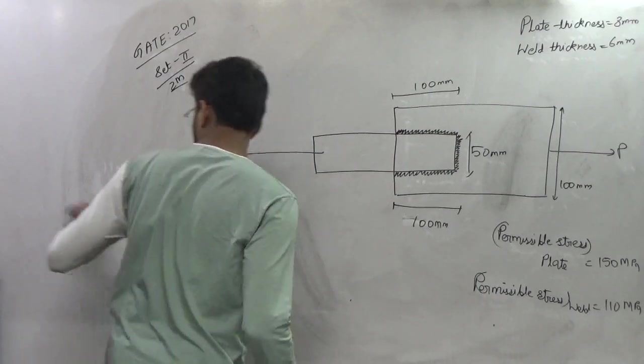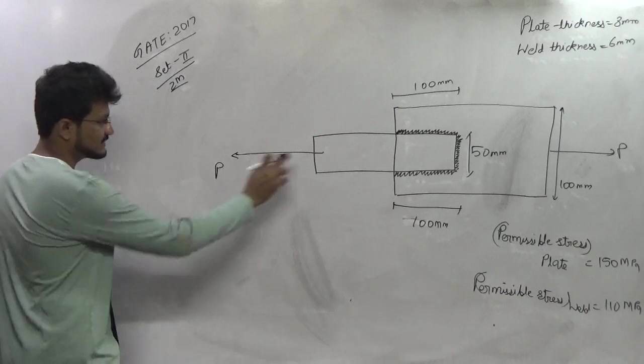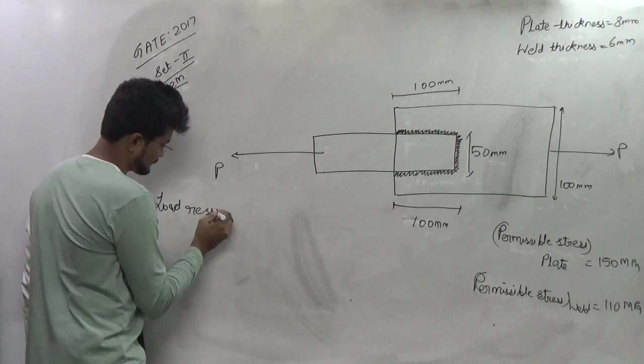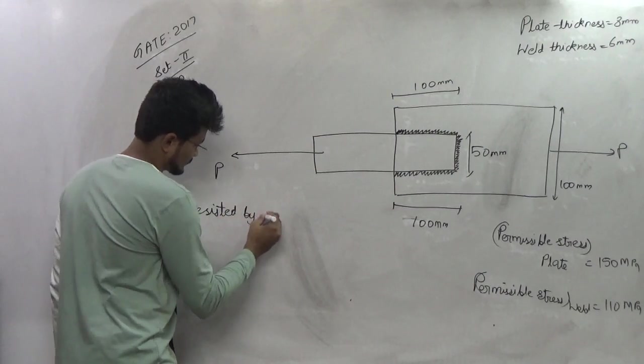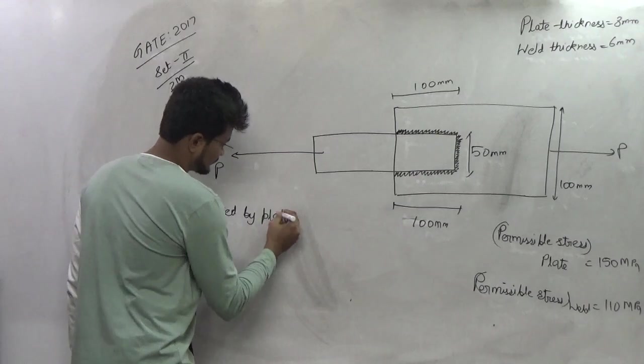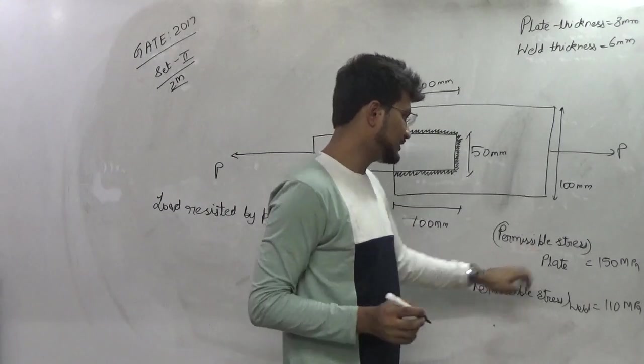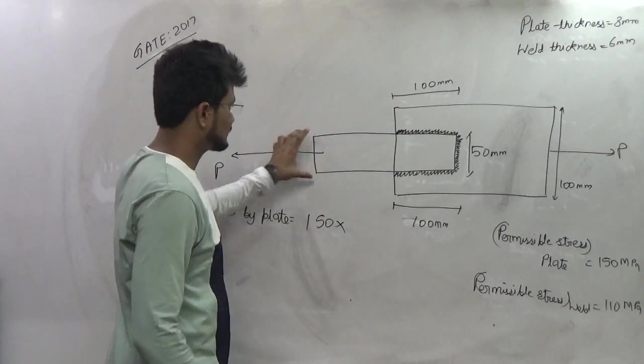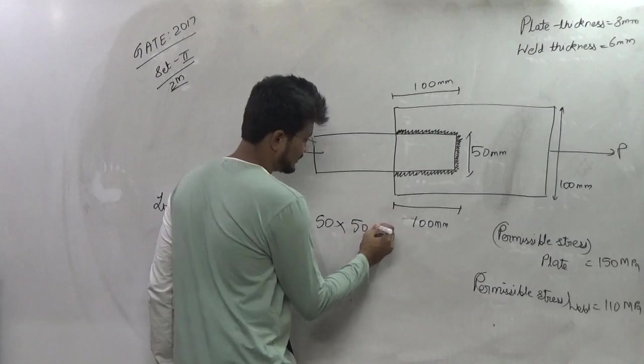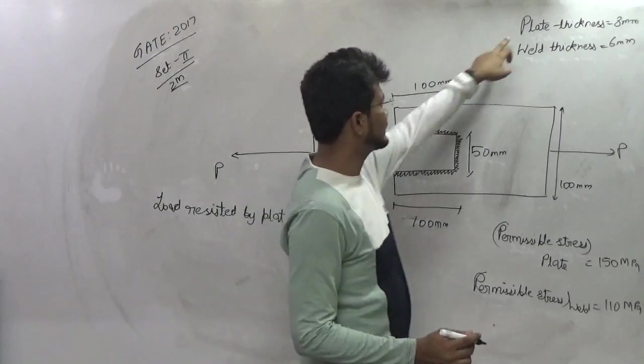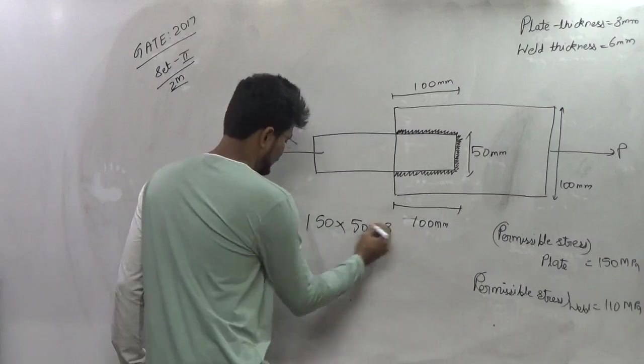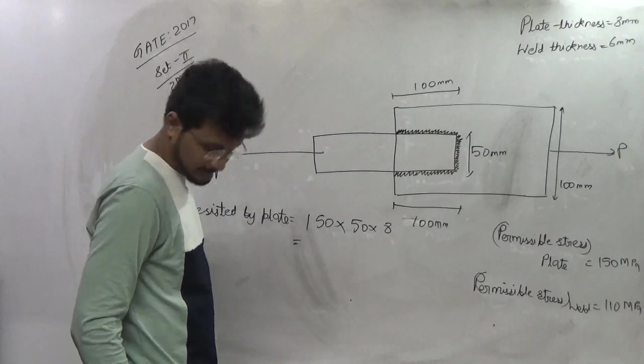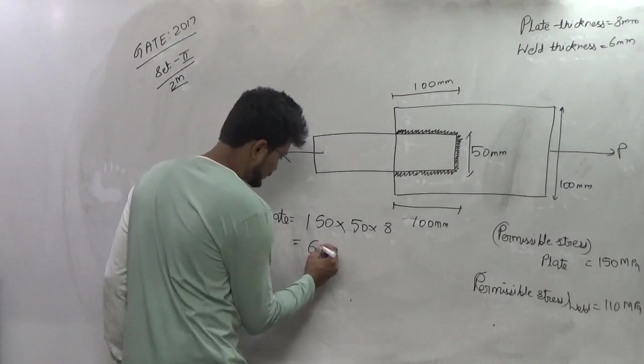So first we will calculate the load which can be resisted by the plate. So this comes equal to the permissible stress of the plate which is given as 150 MPa, so 150 multiplied by the width of the plate which is 50mm and the plate thickness is 8mm. Therefore this value comes equal to 60 kN.